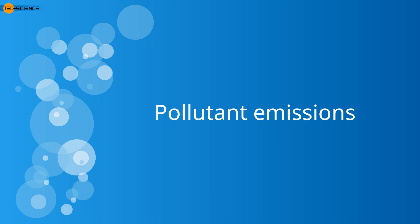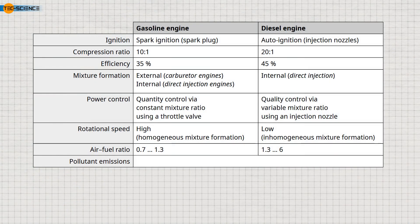In principle, the combustion of fossil fuels such as gasoline and diesel produces the harmful greenhouse gas carbon dioxide. In addition, the fuel-air mixture in the engine is never completely homogeneous. As a result, there are always areas where a combustible air-fuel ratio is not achieved and the fuel remains unburned. The greater the oxygen deficiency, the more unburned fuel remains. In the case of incomplete combustion, the toxic carbon monoxide is produced in greater quantities.